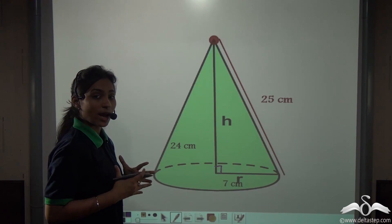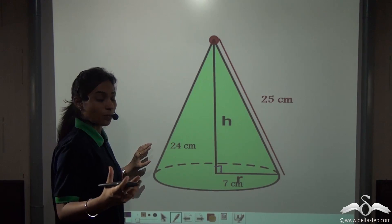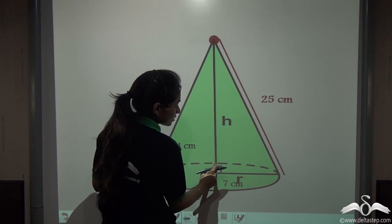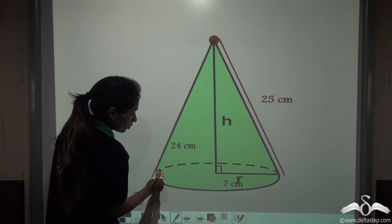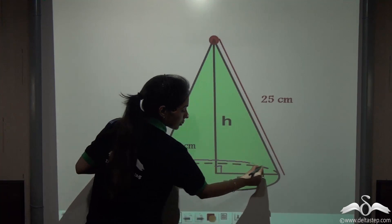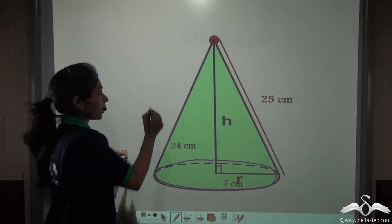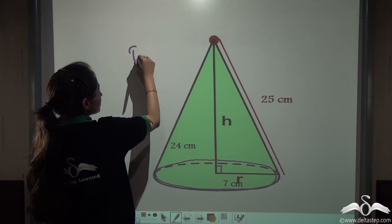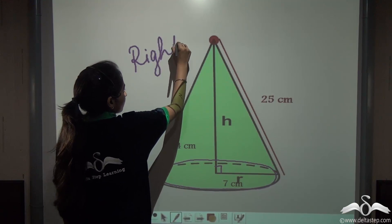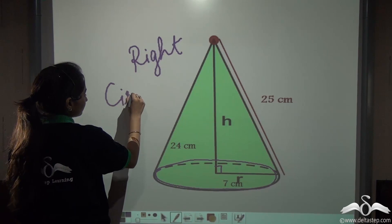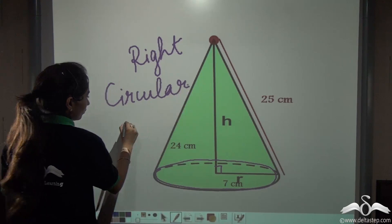So what is this cone actually? This cone is a right circular cone. Why? Because this height creates a right angle with the radius and this cone has a circular base. That is why it is called a right circular cone.